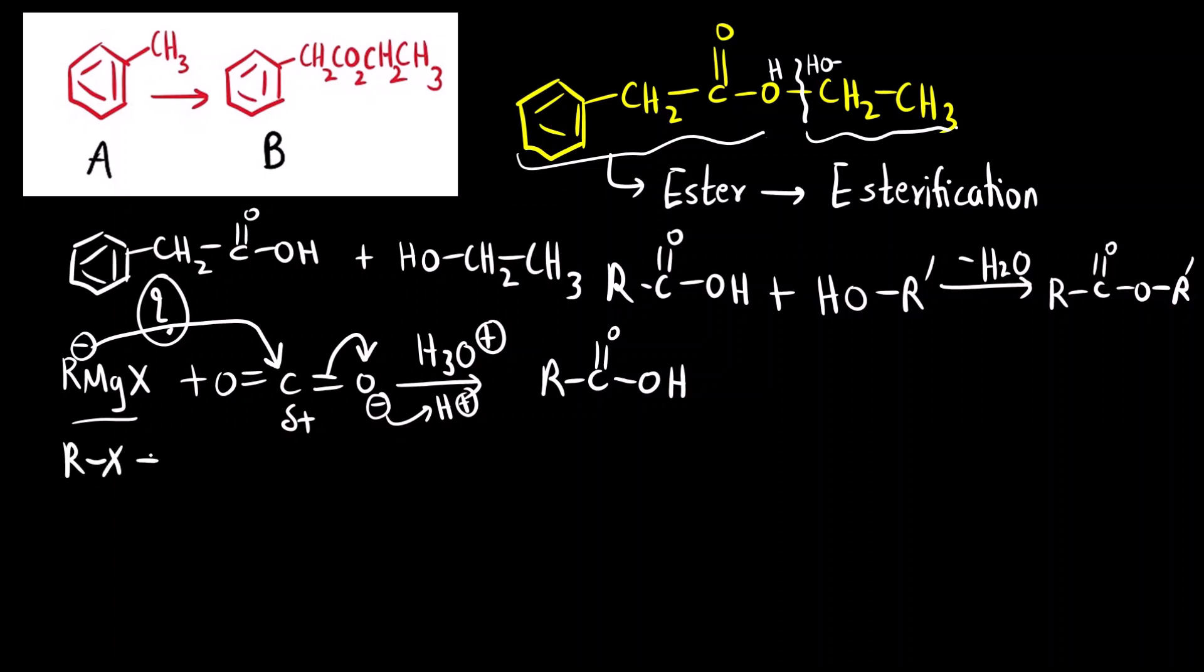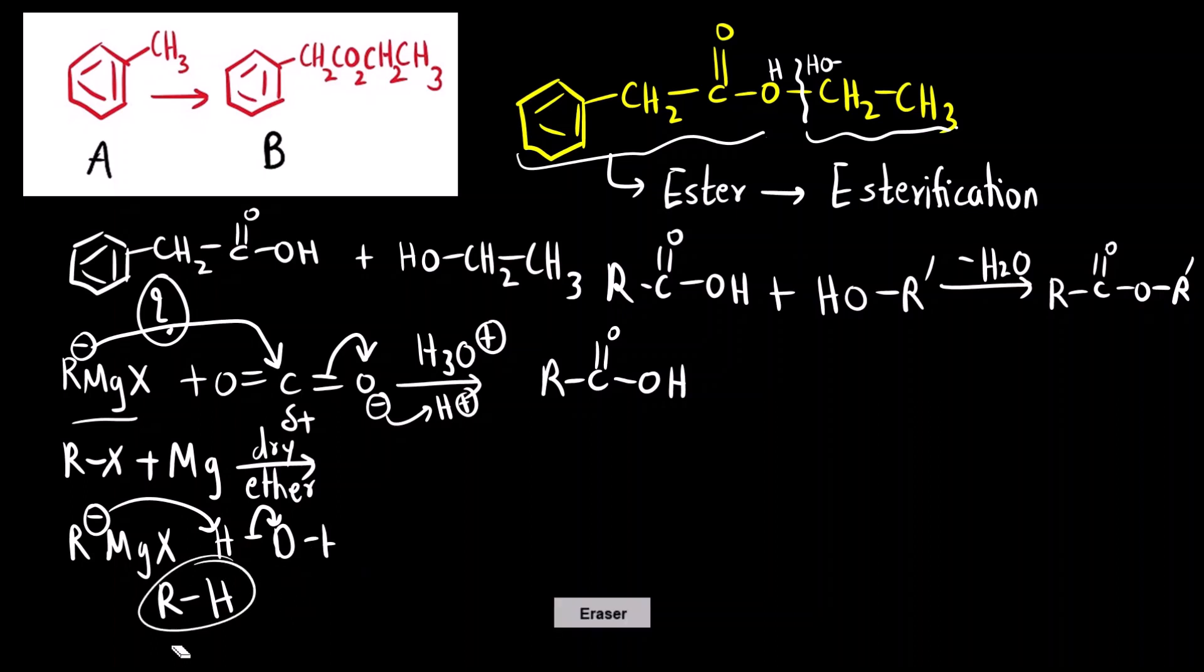The next question is how do you synthesize the Grignard reagent? That is simple. We use alkyl halide in presence of magnesium and ether as a solvent. Dry ether is used as a solvent. It can be any ether, for example, diethyl ether. The only condition is it should be moisture free. Because if we know that Grignard reagent, if any moisture is present, this is RMGX, this R minus can pick up proton from water. It will form alkane instead of Grignard reagent. So to avoid this reaction, we need moisture free condition. That is why we use dry ether.